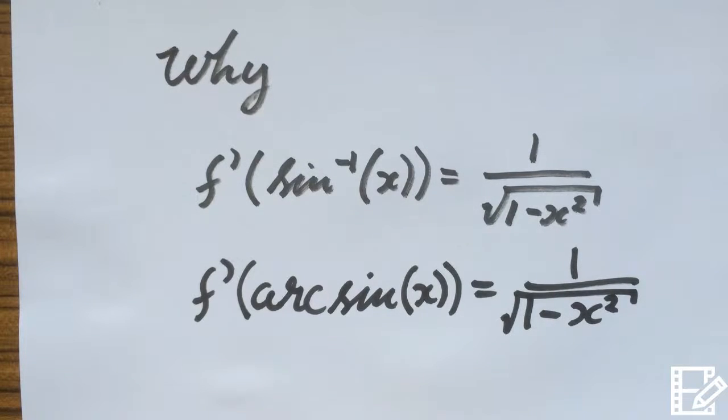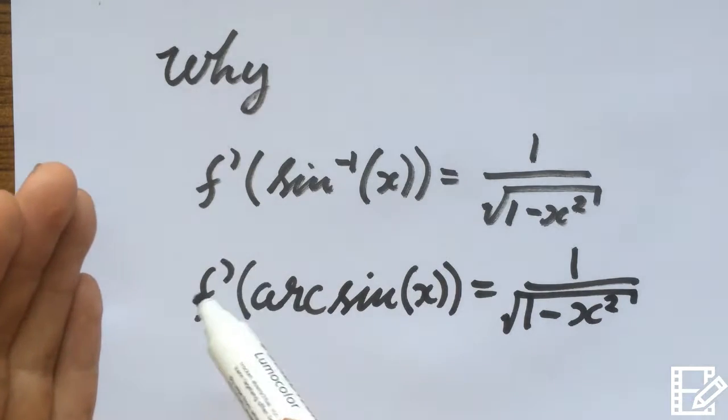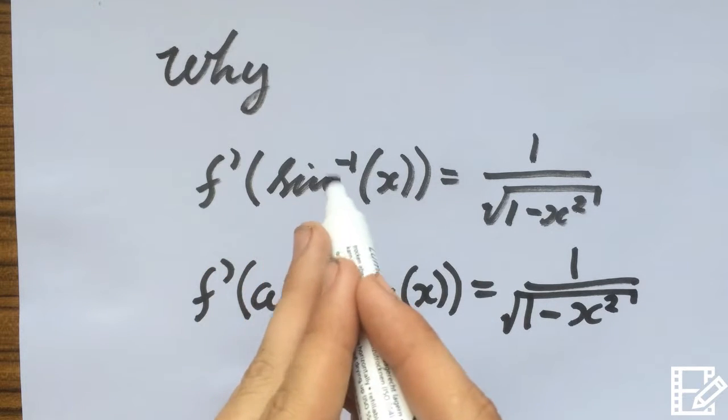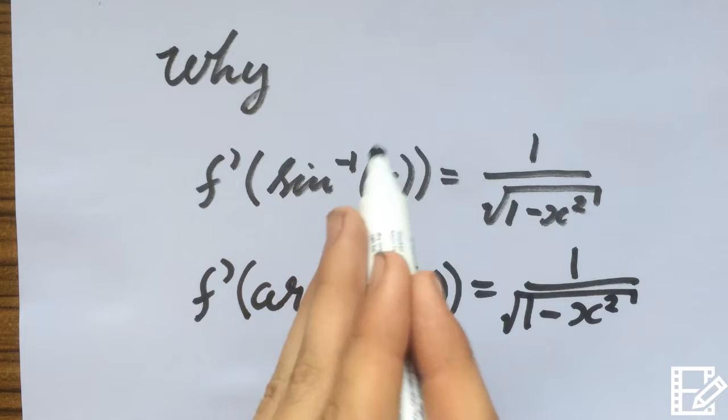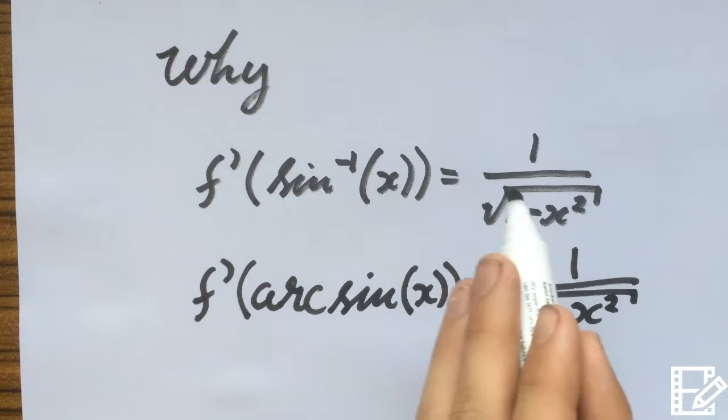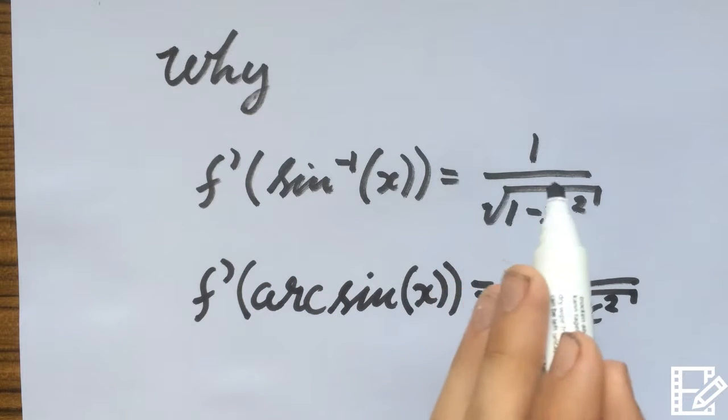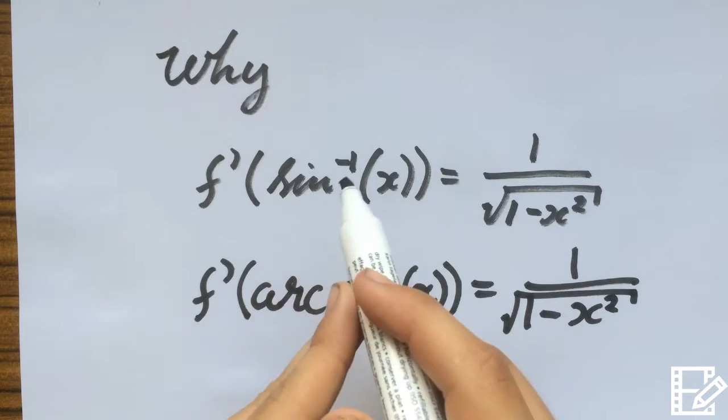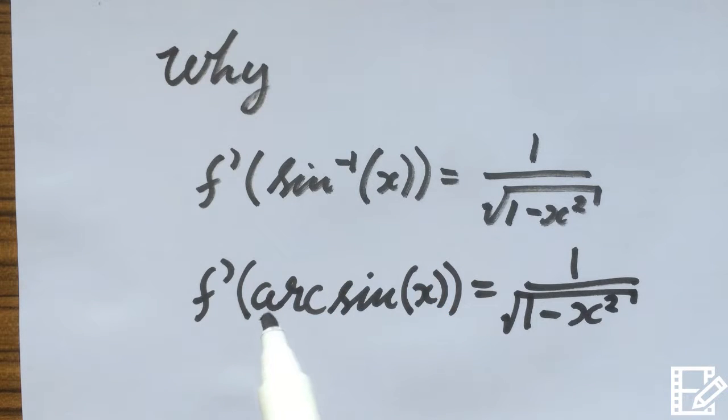Welcome back to another one of my proof series episodes where I show you why certain things happen in mathematics. This episode I'll be showing you why the derivative of arcsin or inverse sine, sine to the power of negative 1 of x, equals 1 over square root of 1 minus x squared. Now I wrote these both because they're the same thing. Some people write it as sine to the power of negative 1 and some people write it as arcsin, and that's because they're both the same.